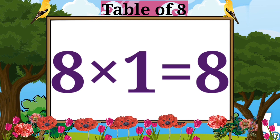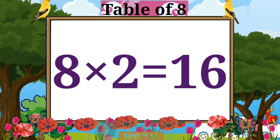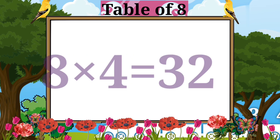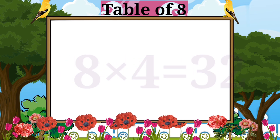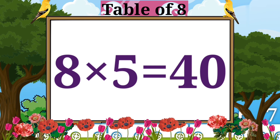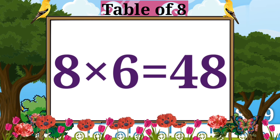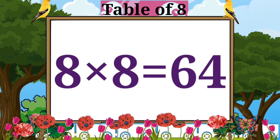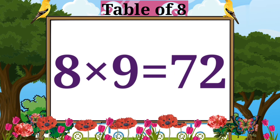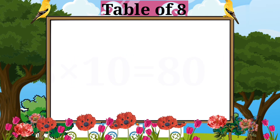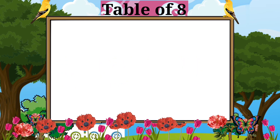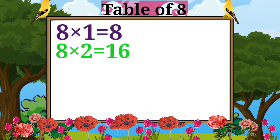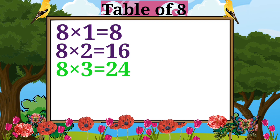Table of eight. Eight ones are eight. Eight twos are sixteen. Eight threes are twenty-four. Eight fours are thirty-two. Eight fives are forty. Eight sixes are forty-eight. Eight sevens are fifty-six. Eight eights are sixty-four. Eight nines are seventy-two. Eight tens are eighty.